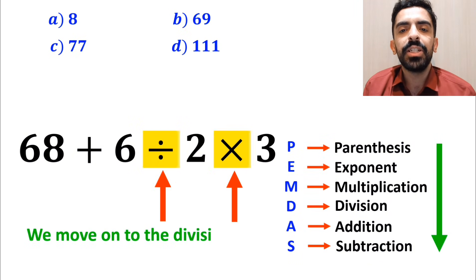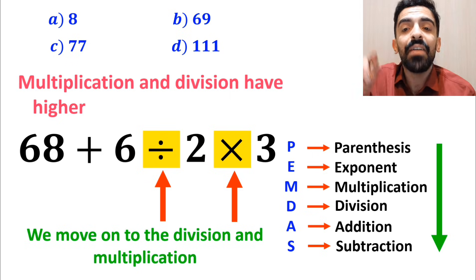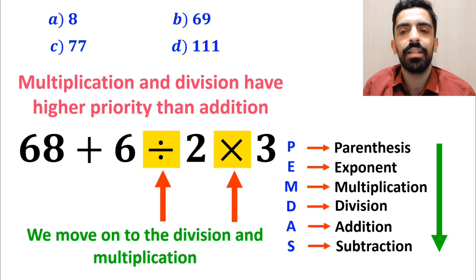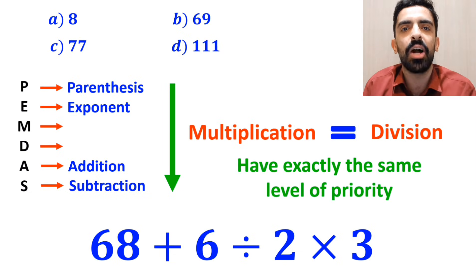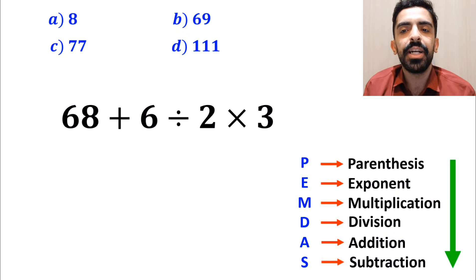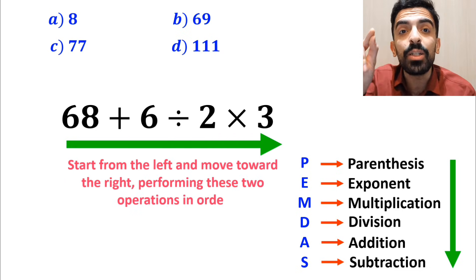Next, we move to the division and multiplication because they have higher priority than addition. However, it's really important to understand that multiplication and division have exactly the same level of priority. In this situation, the best approach is to start from the left and move toward the right, performing these two operations in order.